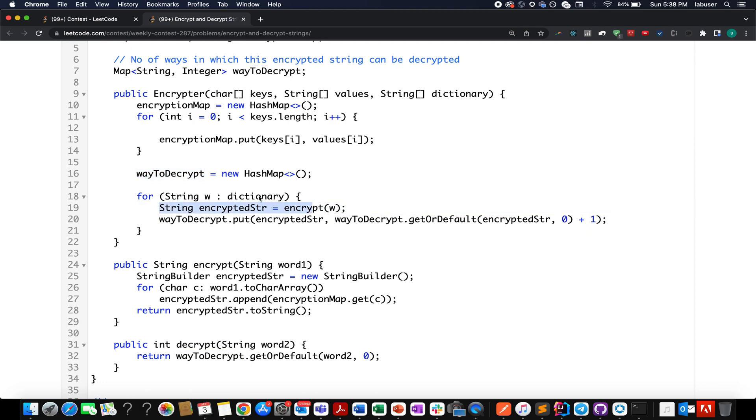Once I am done with this, then I go ahead and create a new hash map for ways to decrypt. I iterate over all the elements or all the words of dictionary and I generate encrypted strings. Once I have generated encrypted strings, I put these encrypted strings in my ways to decrypt and with each iteration I update the frequency by 1.